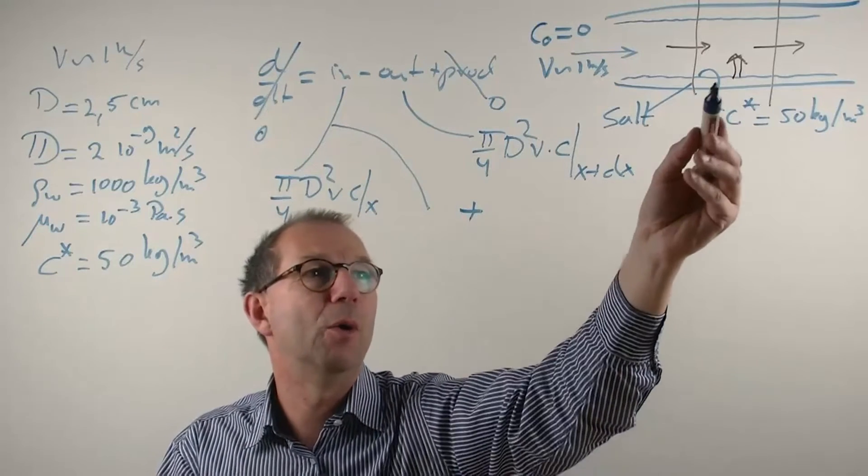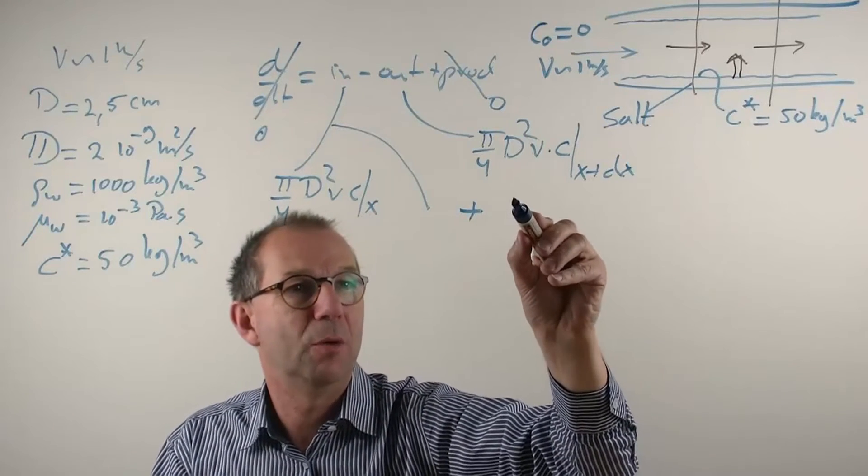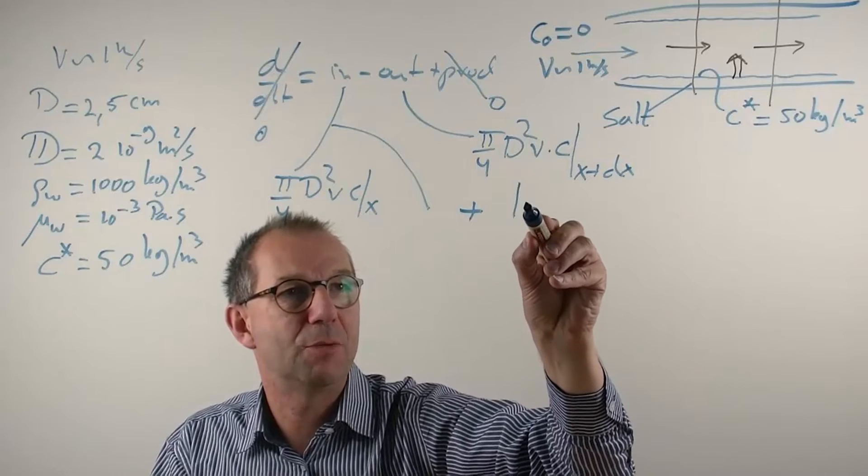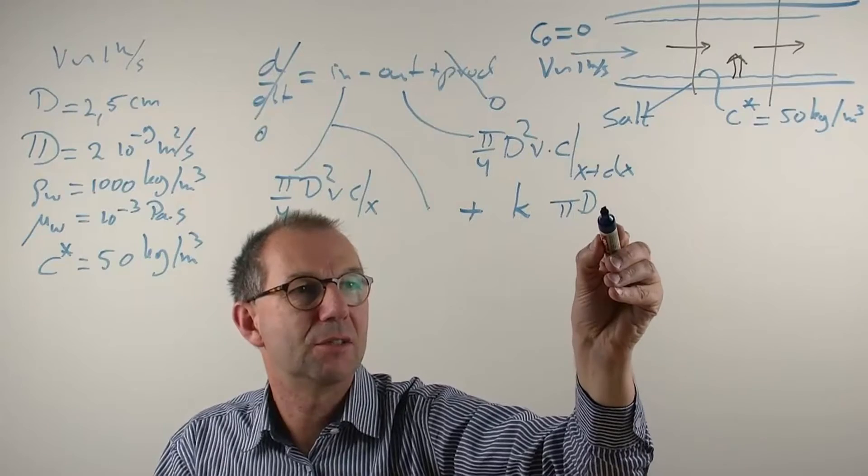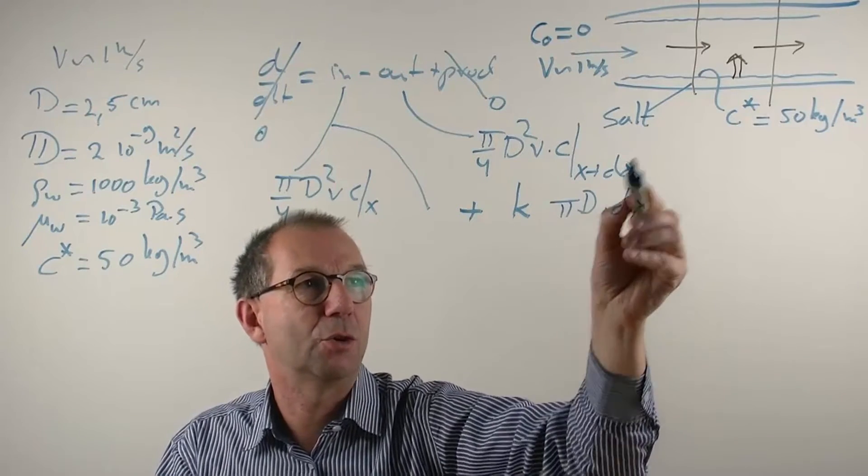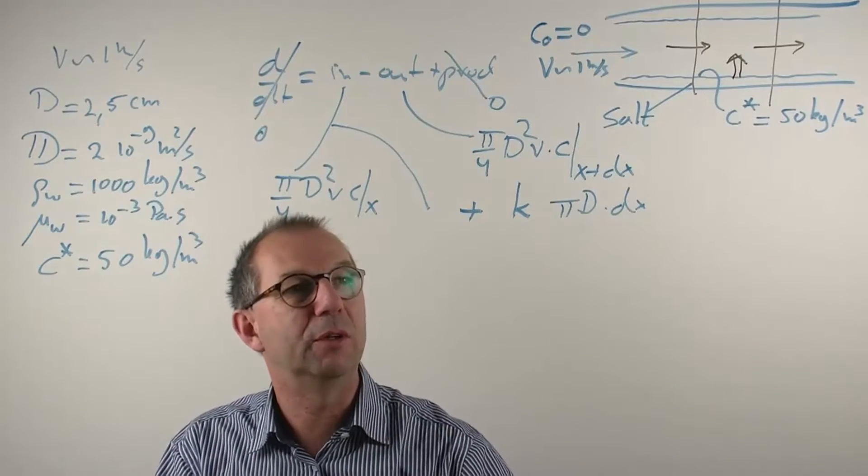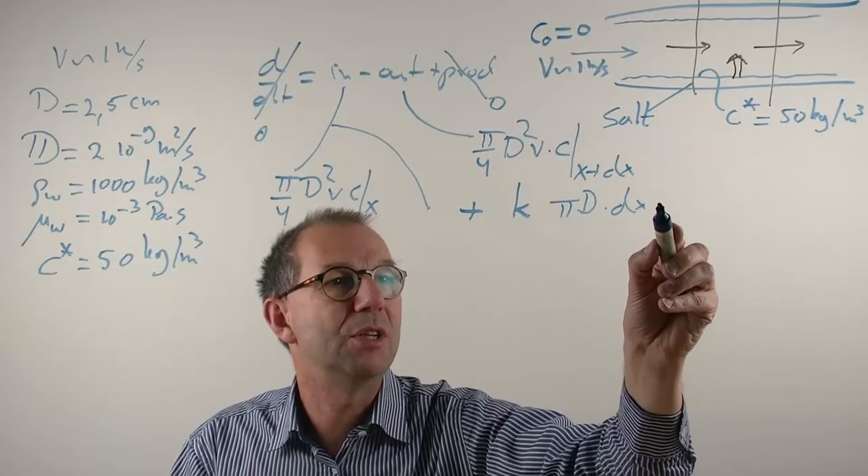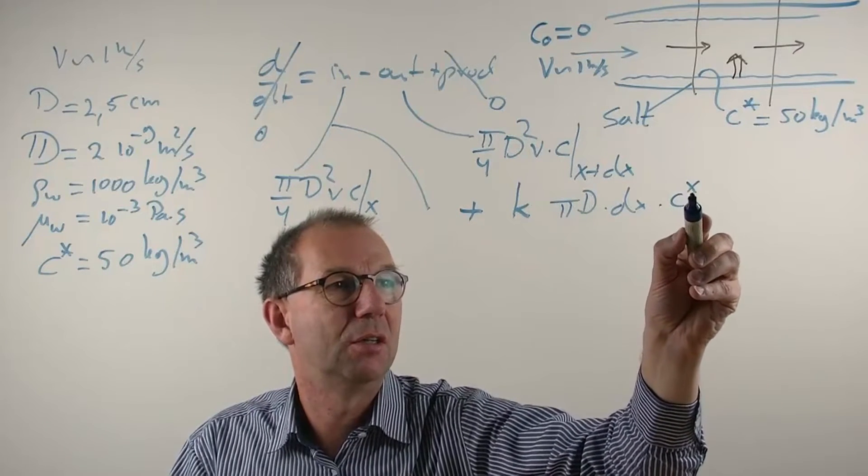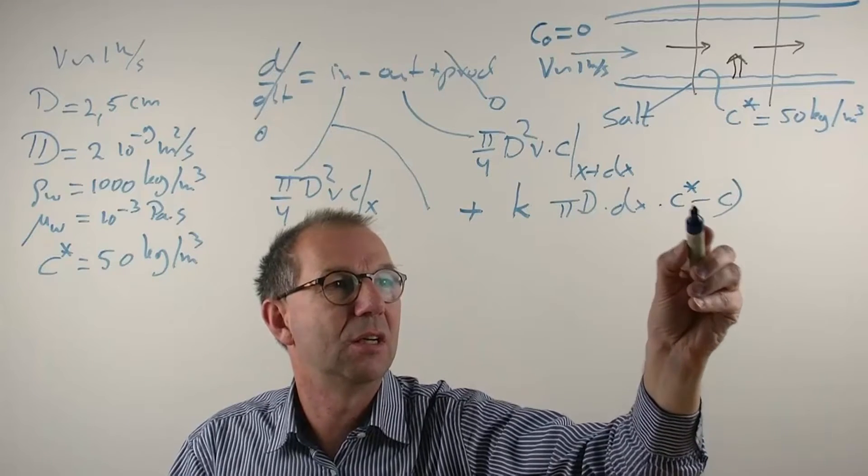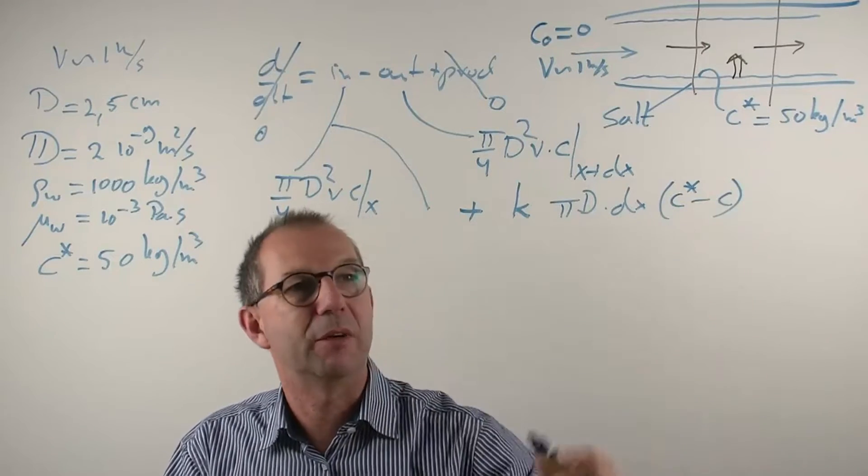So we need to add a flow and this one is best modeled with the simple idea of a mass transfer coefficient times the area, which is π d times dx, π d the circumference, dx the width of the volume that we have, times the delta c, the driving force, which is c star minus the c at the point we are looking, so this is the variable.